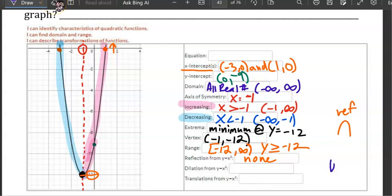Dilation: it looks like it's more vertical, so that's a vertical stretch. And then translations from 0,0 to the new vertex, it went left and down.